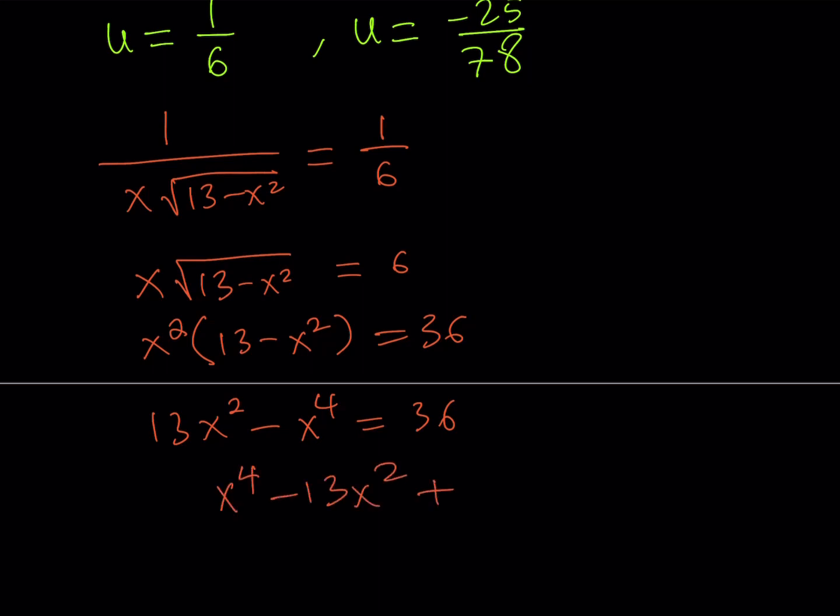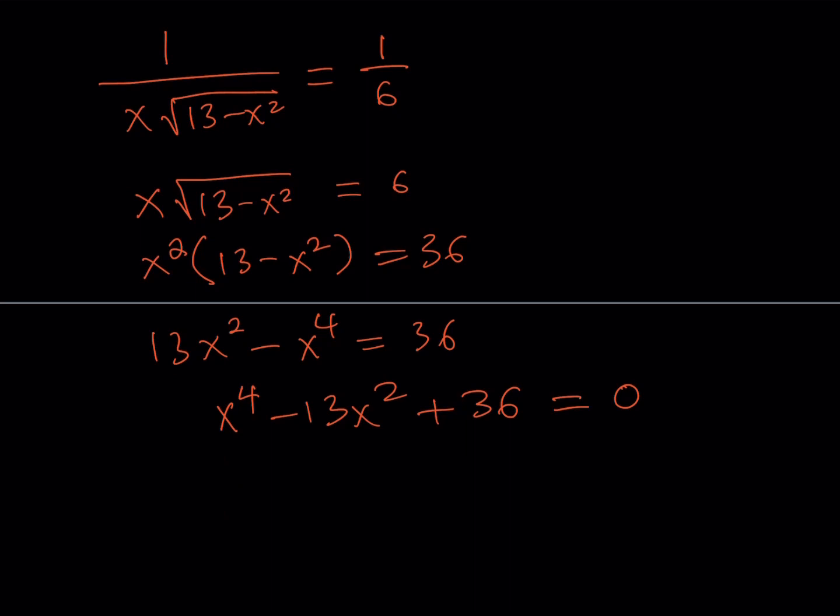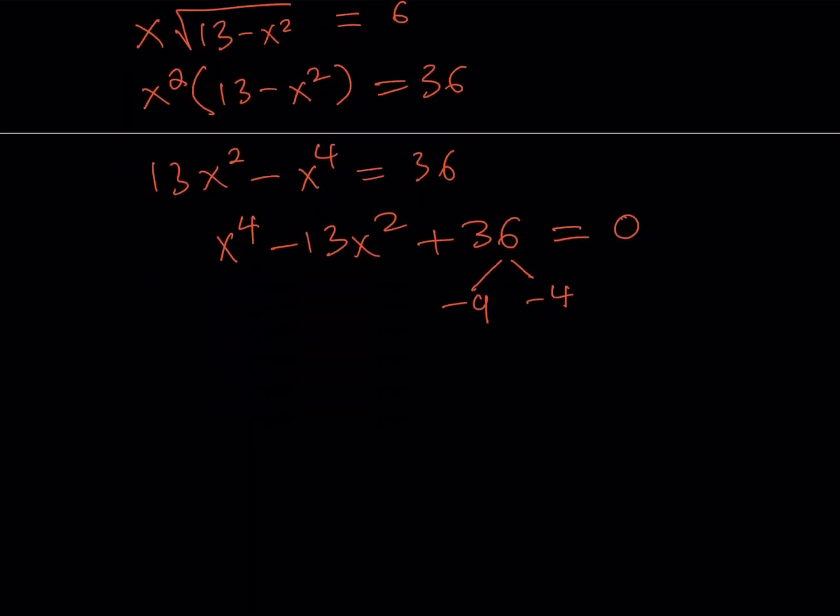And here, we do get some good solutions. How do we get some good solutions? Well, first of all, notice that this doesn't have any x cubed or x in it, so it can be easily factored. So our idea is to find two numbers whose product is 36 and whose sum is negative 13, right? You know how to factor trinomials, and this is a trinomial. So those numbers are negative 9 and negative 4, which means that this expression can actually be factored into x squared minus 9 and x squared minus 4, which is pretty, right?